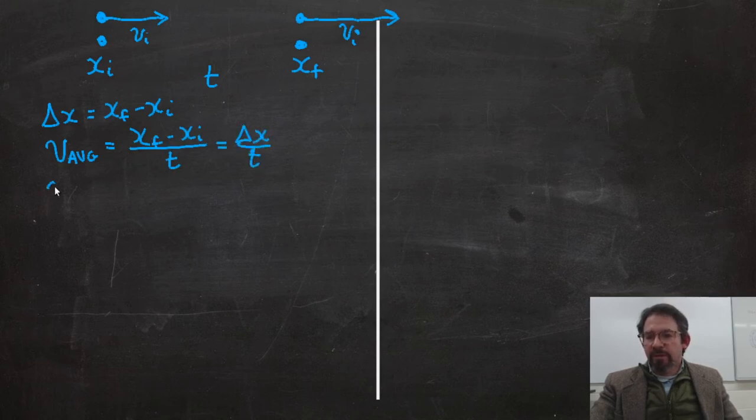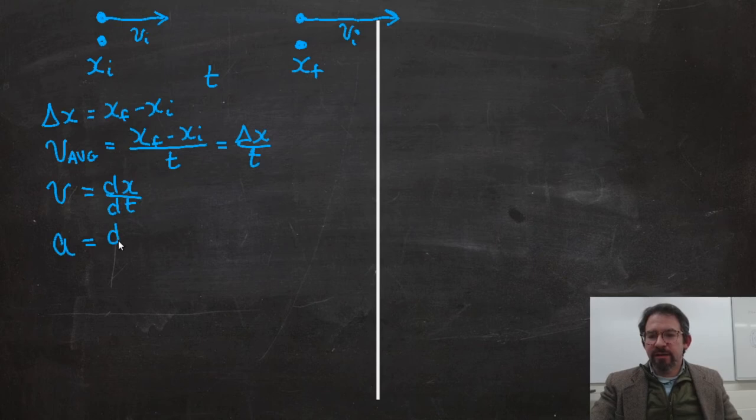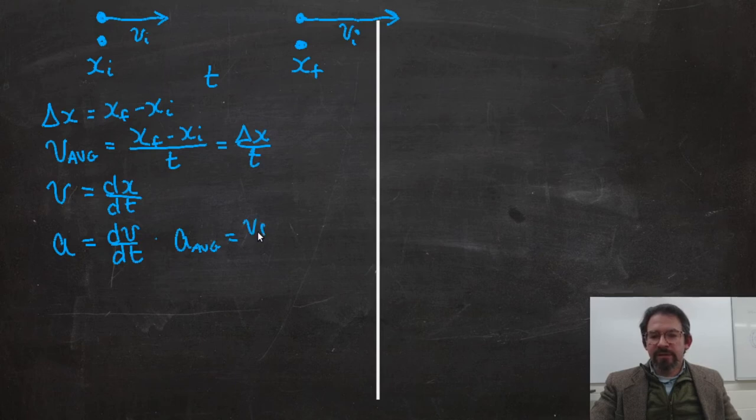We might want to know what is my velocity. We define that as the derivative of position with respect to time. What is my acceleration? Well, I know the acceleration is the time derivative of velocity with respect to time. Or, in a discrete case, the average acceleration is my final velocity minus my initial velocity divided by how much time it took.